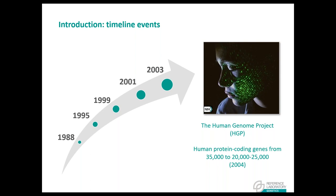In April 2003, we witnessed the completion of the human genome sequence. That year, the National Human Genome Research Institute announced the first grants aimed at discovering all parts of the human genome crucial for biological function. Finally, in 2004, a scientific description of the finished human genome sequence was published, reducing the estimated number of human protein-coding genes from 35,000 to only 20,000–25,000.